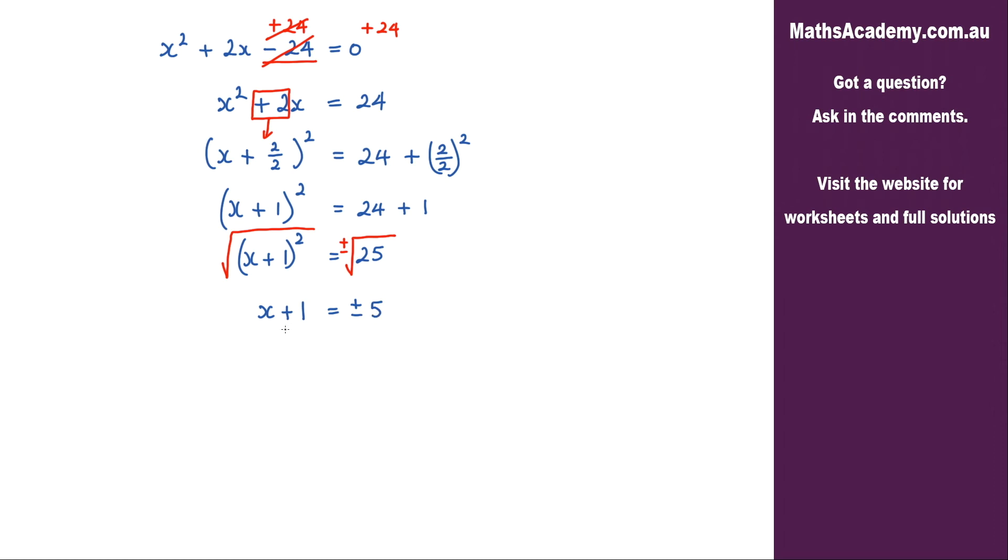Now the last step here is to eliminate this plus 1. So we're going to subtract 1 from both sides. That will leave me with the x on the left and then we'll have minus 1 plus or minus 5.